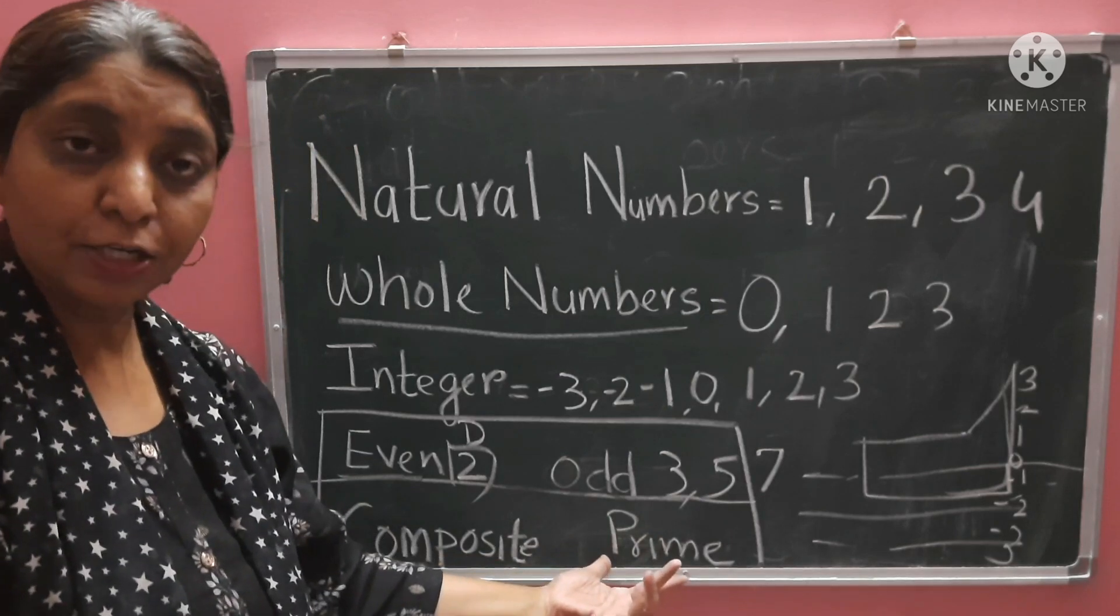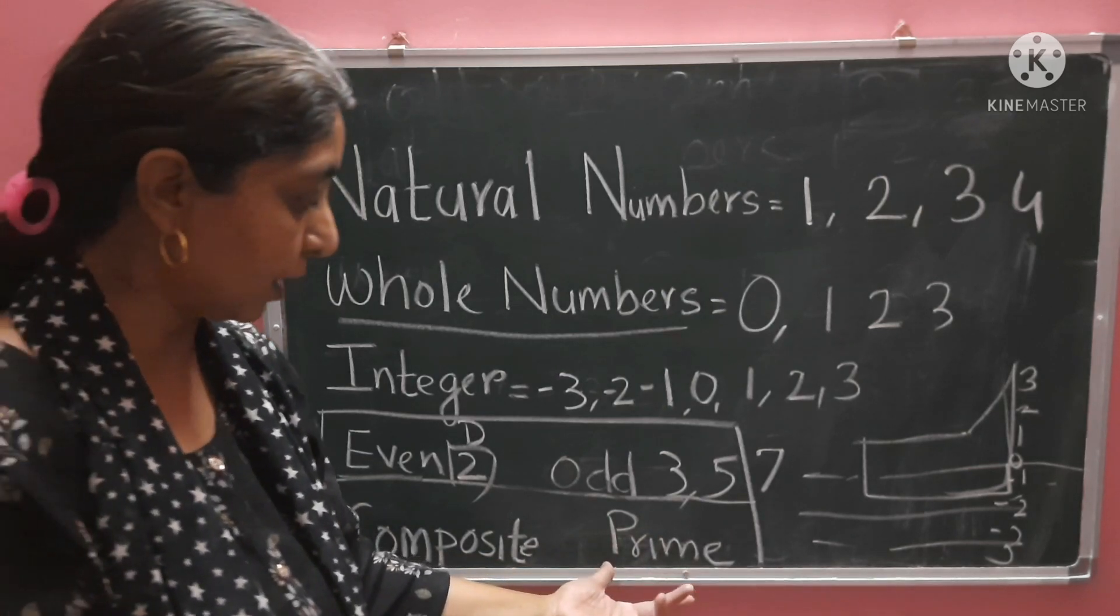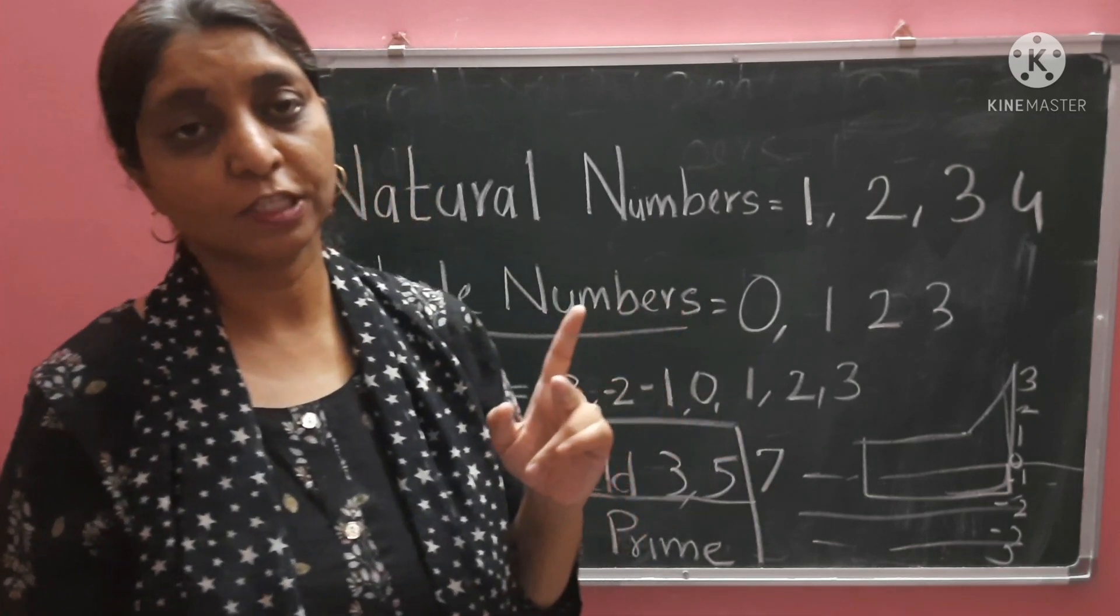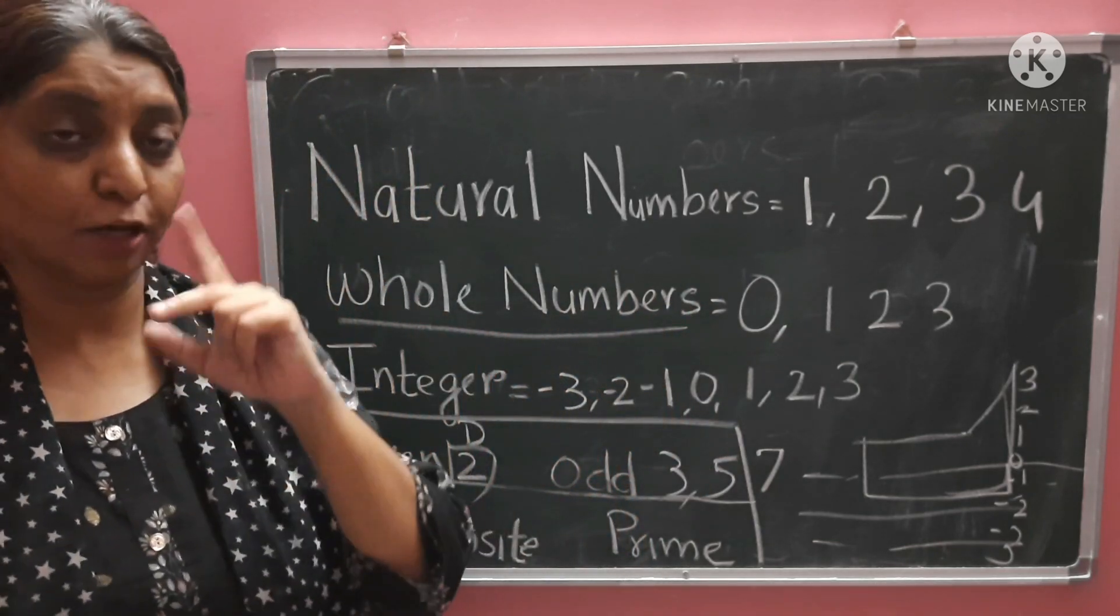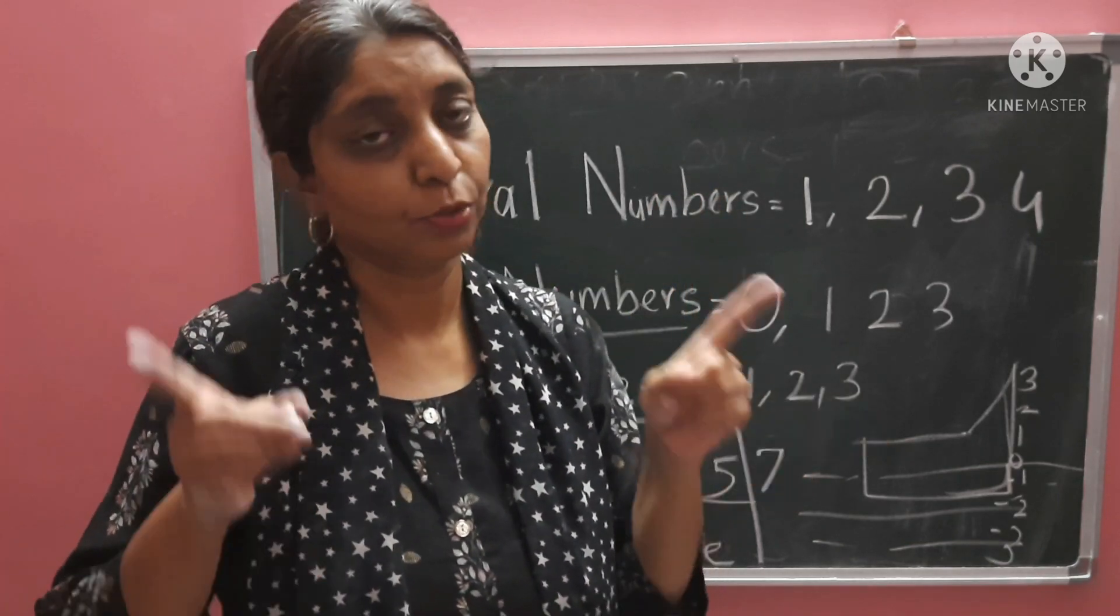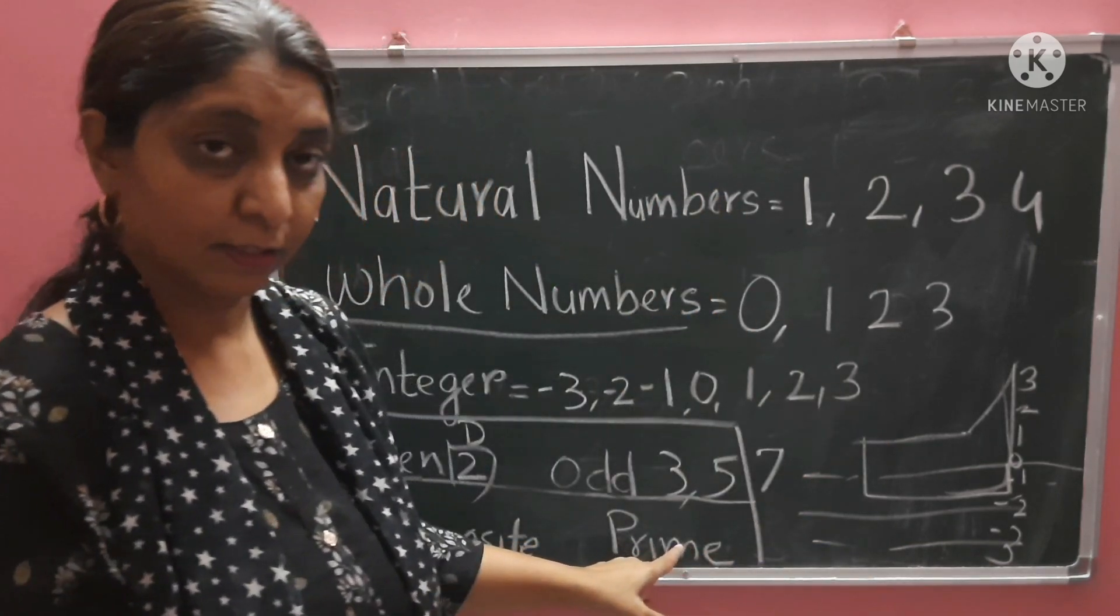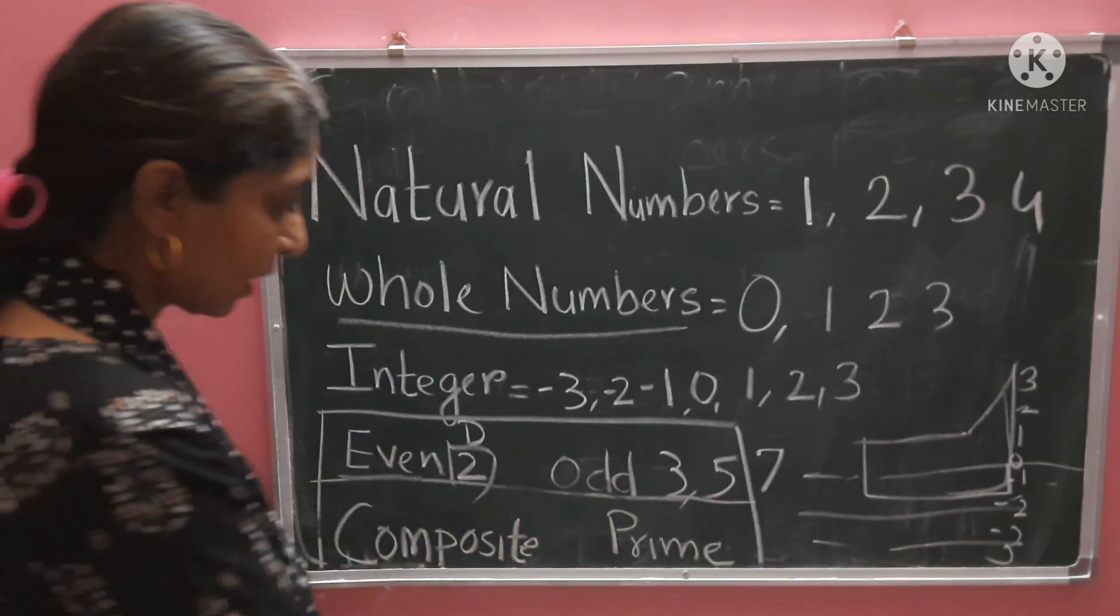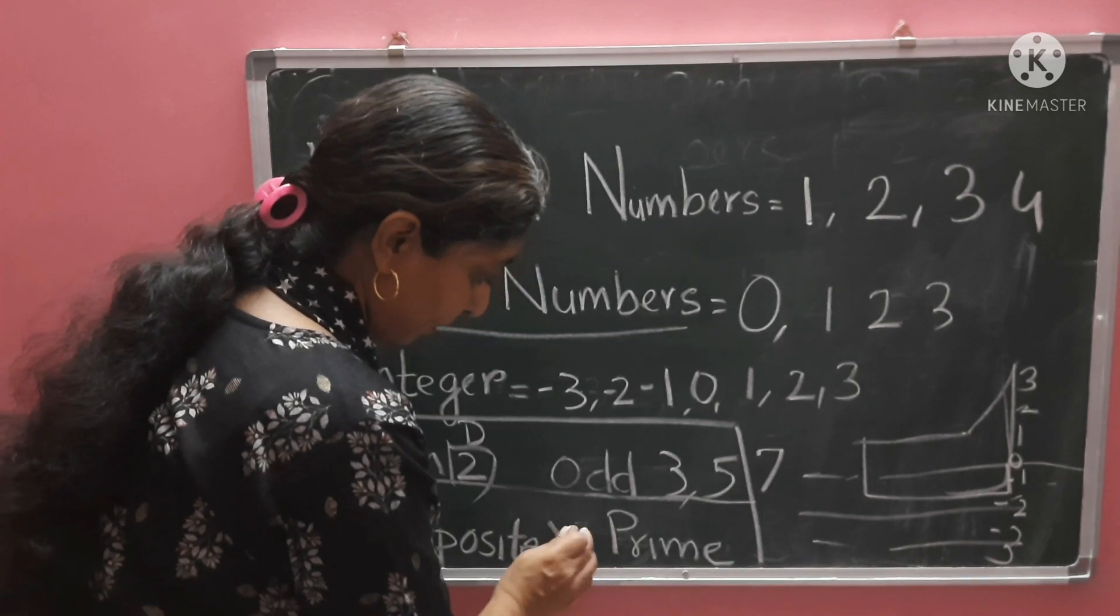Prime numbers we have seen in the last class. Numbers greater than 1 which are divisible by the number itself. Numbers that appear in the table of 1 and their own table are prime numbers. And numbers that are not prime are called composite numbers.